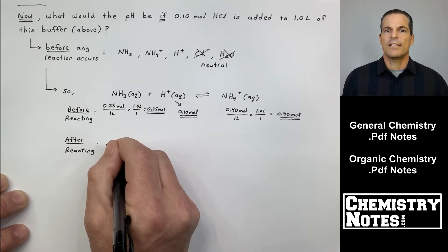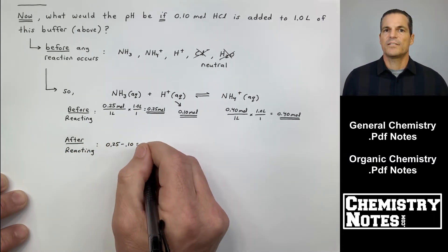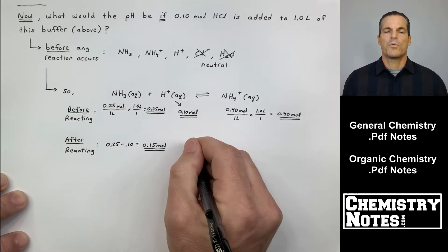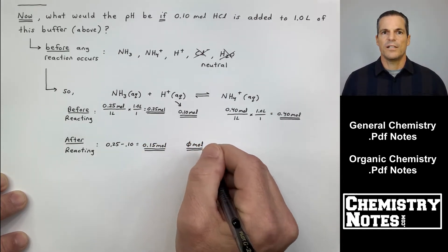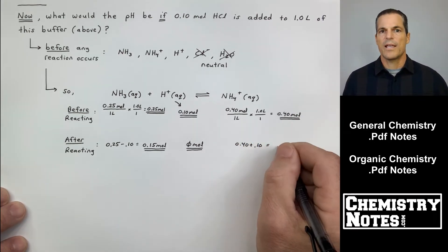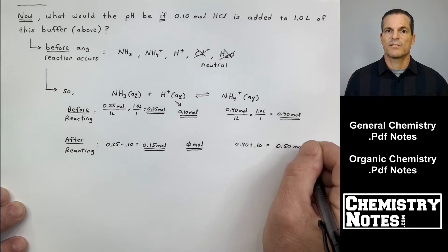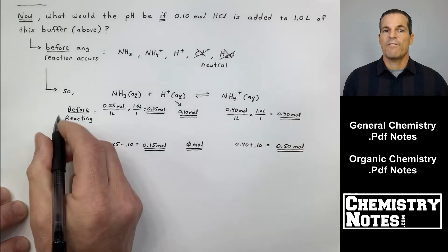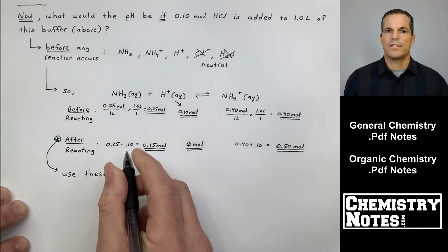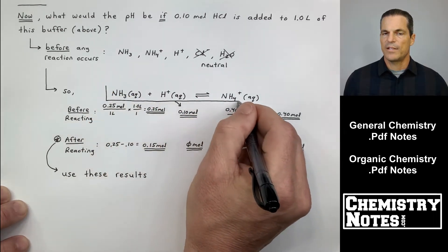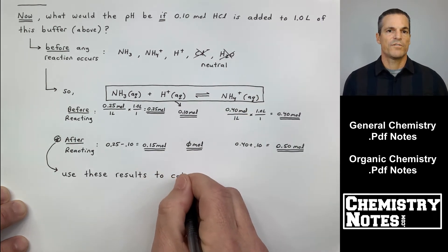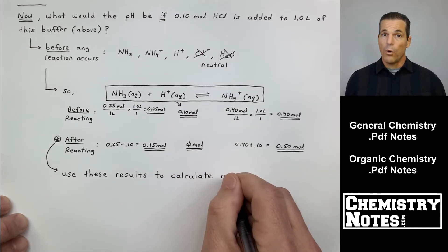I have 0.40 moles of NH4 plus at time zero. After reacting, after all of the H plus has been quenched or is gone—in other words, it's been converted when it reacted with NH3 to make NH4 plus on the right hand side of this equation—after reacting, I have not 0.25 moles of NH3. I only have 0.15 moles of NH3 now.